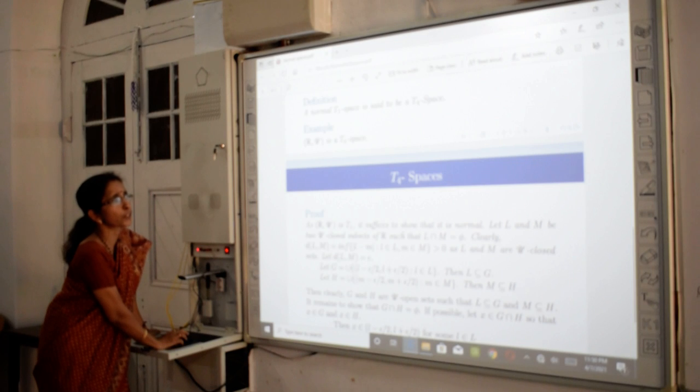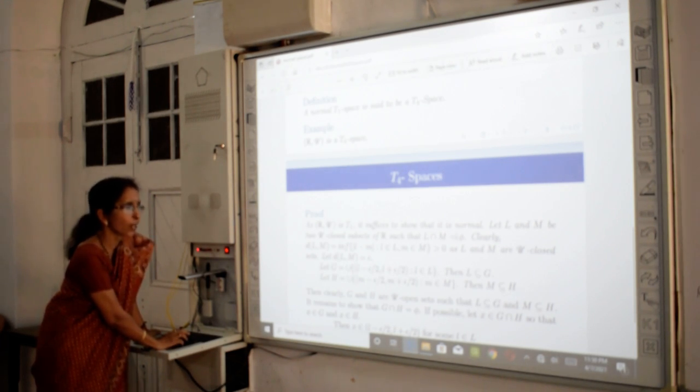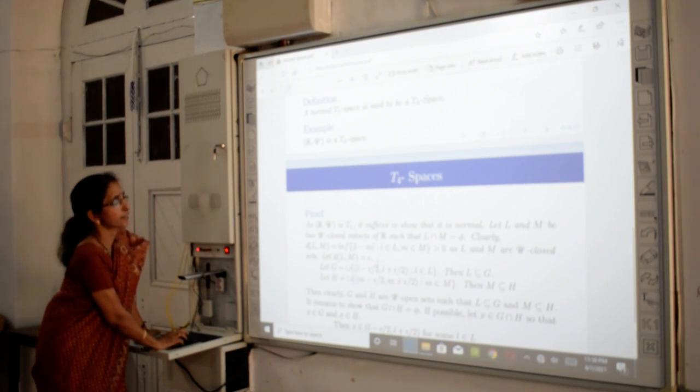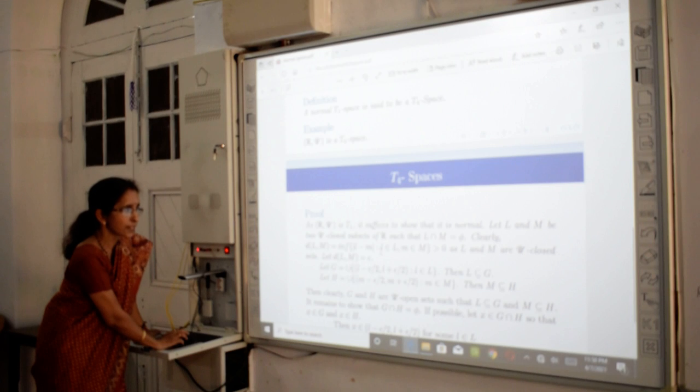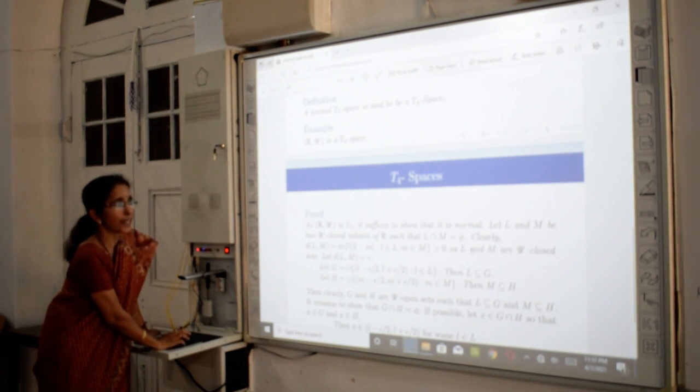Let L and M be two closed subsets of R, such that L and M are disjoint. Then, we find the distance of L and M, that is the minimum of |l - m|, where l belongs to L and m belongs to M. And this distance is positive. Why? Because L and M are two closed subsets.